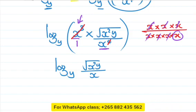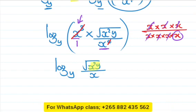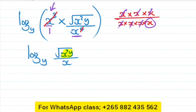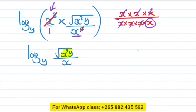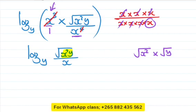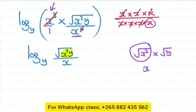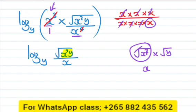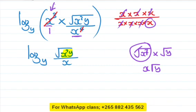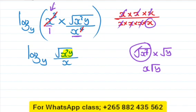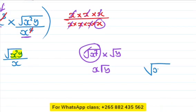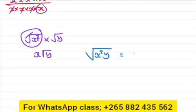X to the power 3 times x is equal to x to the power 4. And the x square, x times x is equal to x squared. The radical can be written as something to the power half.